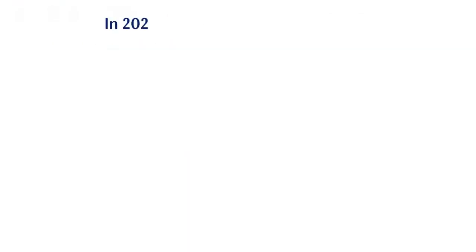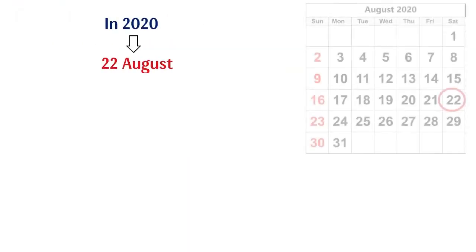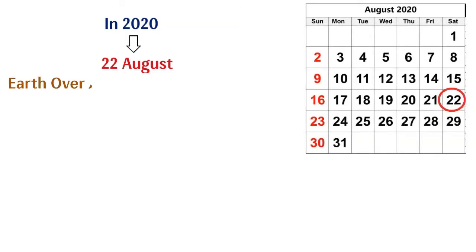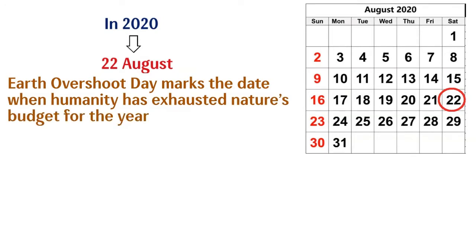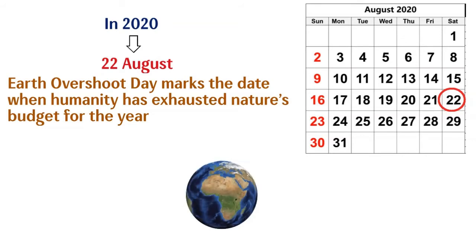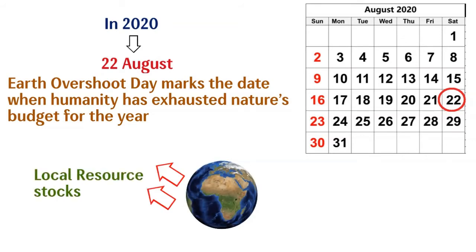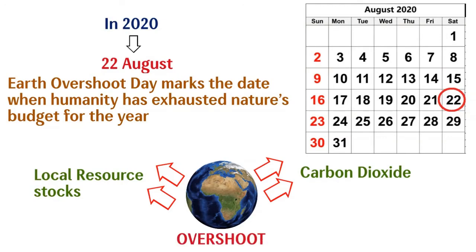In 2020, Earth Overshoot Day lands on August 22nd. Earth Overshoot Day marks the date when humanity has exhausted nature's budget for the year. For the rest of the year, we are maintaining our ecological deficit by drawing down local resource stocks and accumulating carbon dioxide in the atmosphere. We are operating in Overshoot.